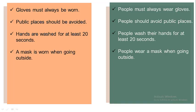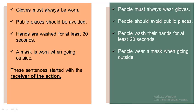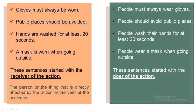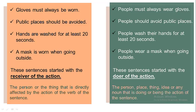We see that the first group of sentences started with the receiver of the action. Can you remind me what we mean by the receiver of the action? Great job! The receiver of the action is the person or the thing that is directly affected by the action of the verb. And in the second group, the sentence is started with the doer of the action, which is people. And of course you remember what we mean by doer of the action — the person, place, thing, idea, or any noun that is doing or being the action of the sentence. If this is the main difference between these two groups of sentences, what is the form of the first group and what is the form of the second group?